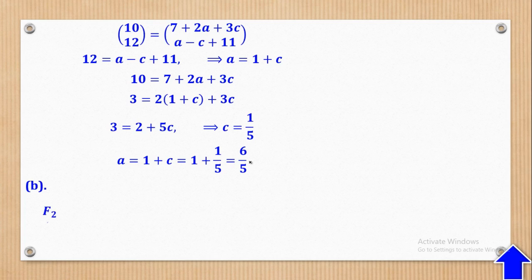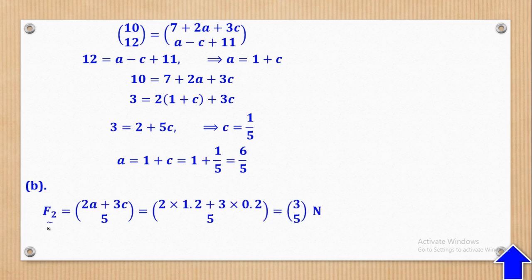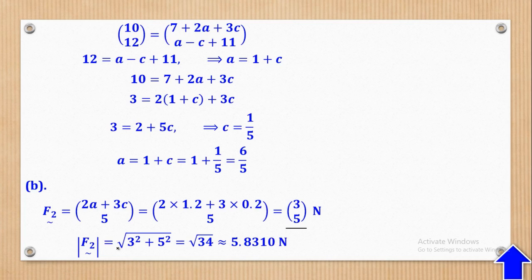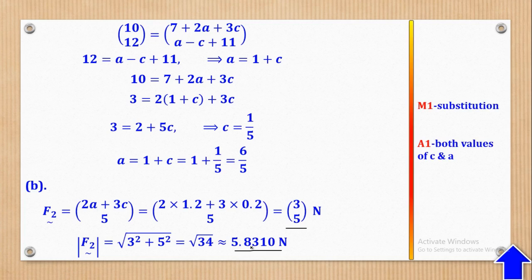For part B, we want the magnitude of F2. F2 = (2A + 3C, 5), so we substitute for A and C to get F2 = (3, 5). Then the magnitude of F2 is √(3² + 5²) = 5.8310 Newtons.